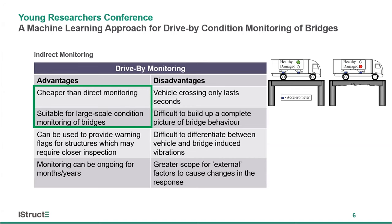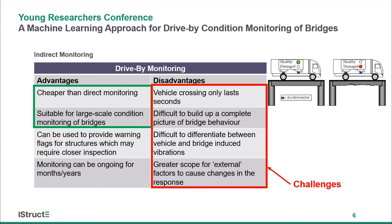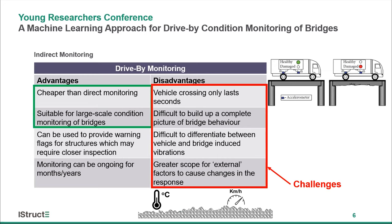It sounds like a great idea but there are plenty of technical challenges — it's not particularly easy to do. Environmental impacts change the response of a structure, so temperature and the speed at which a vehicle crosses will influence the structural behaviour of both the vehicle and the bridge. The complex interaction between the two can cause problems, and things that seem insignificant — like road surface roughness — can have huge implications on how much the vehicle vibrates and hence how easy or difficult it is to understand how the bridge is behaving from in-vehicle measurements.